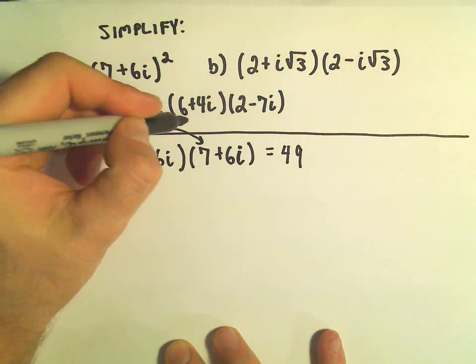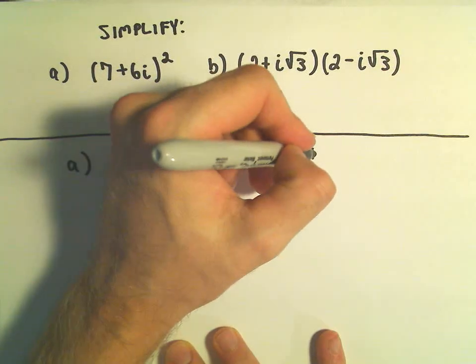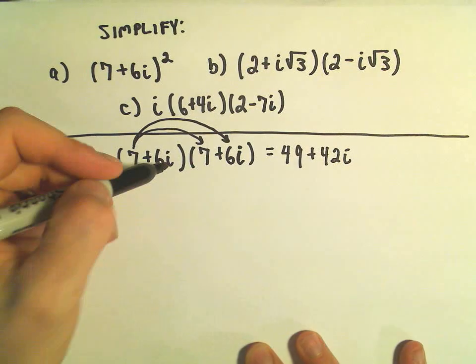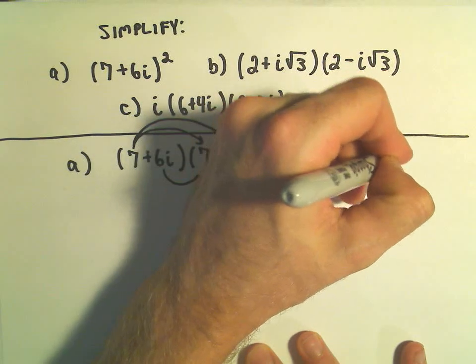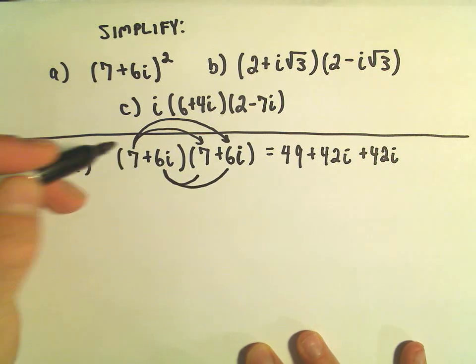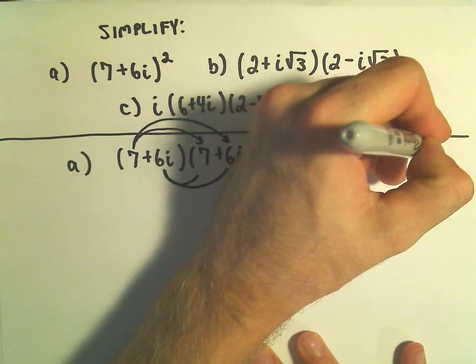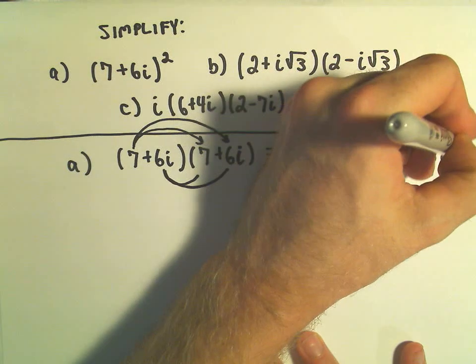I have 7 times 6i, so positive 7 and positive 6 will be positive 42. And we have to stick our i on there. 6i times 7 is going to give us another 42i. And then we take 6i times 6i, so positive 6 and positive 6 is positive 36. And then I get an i times an i, so that's going to be i squared.